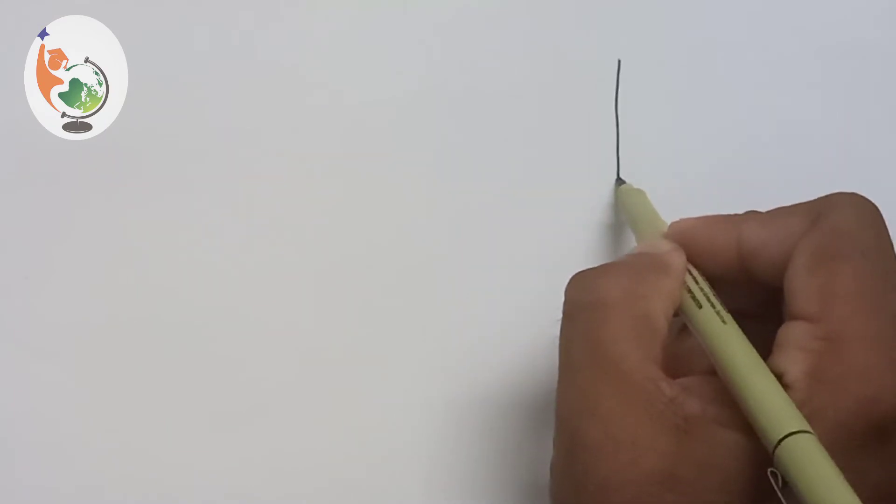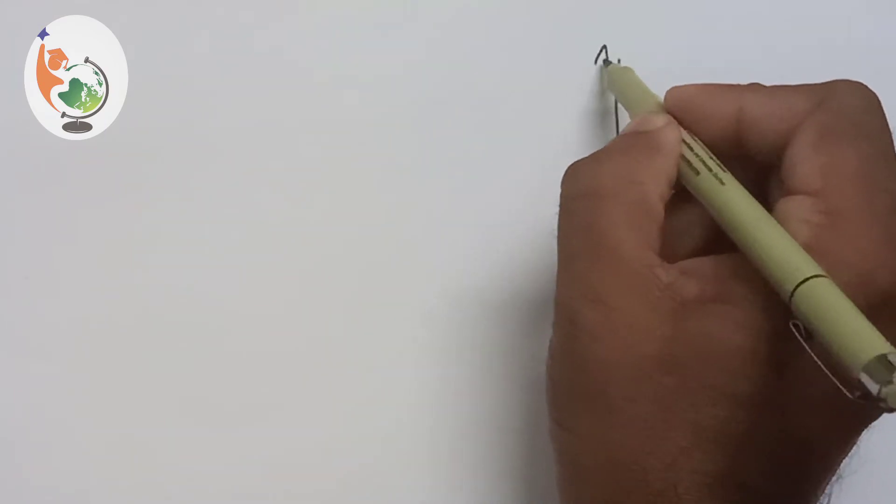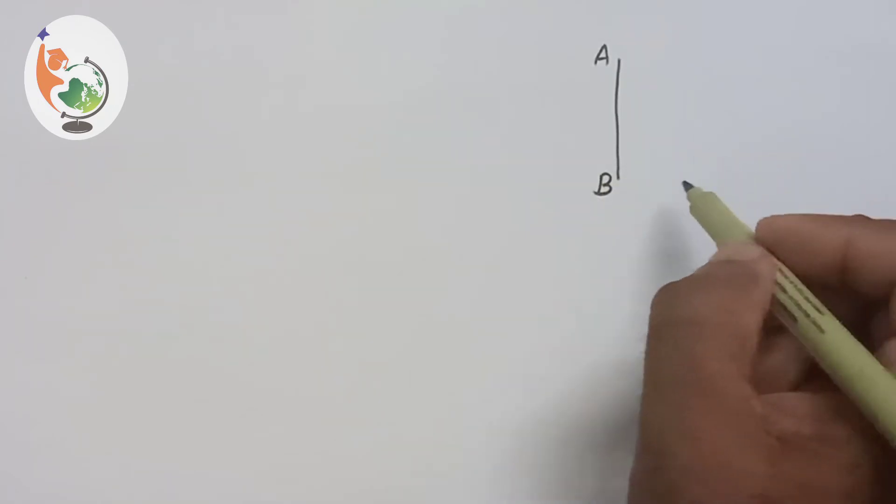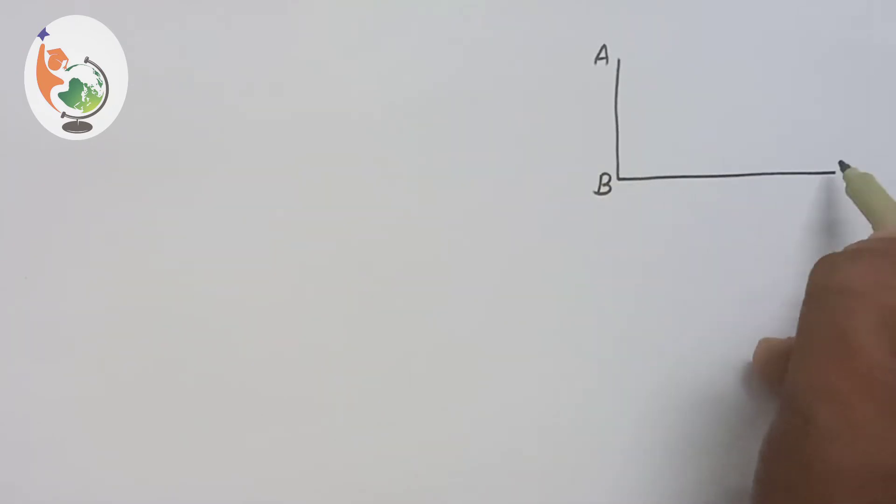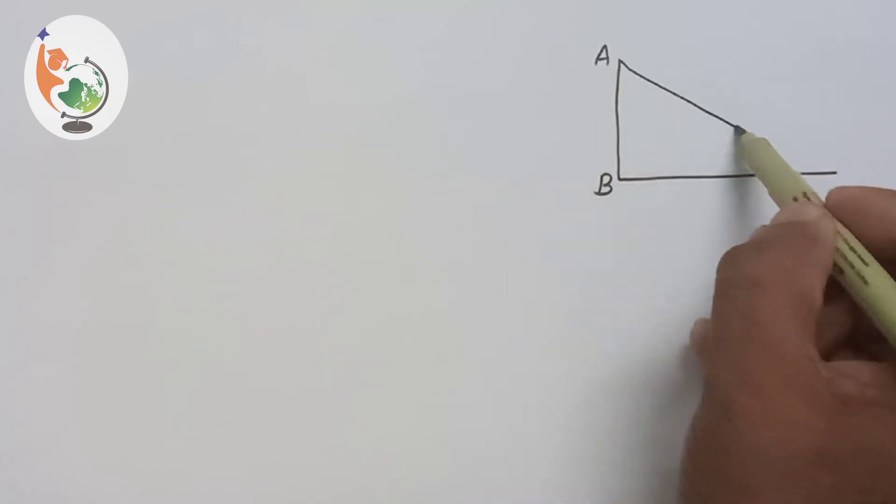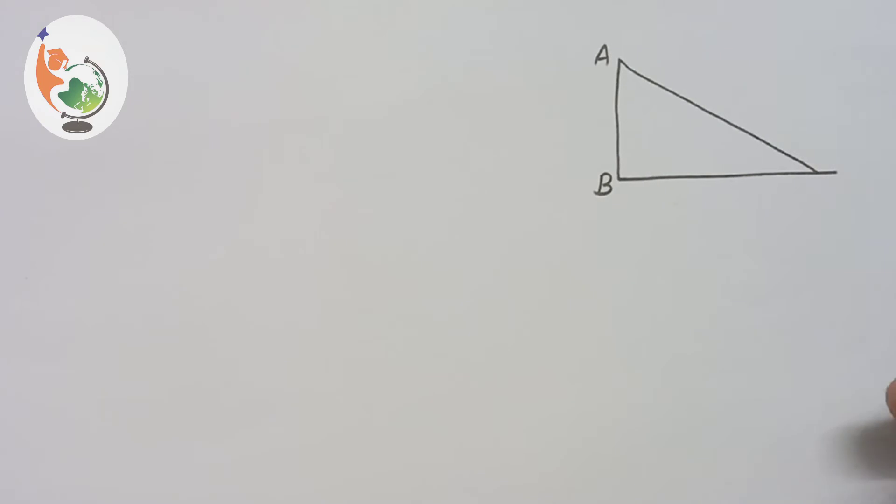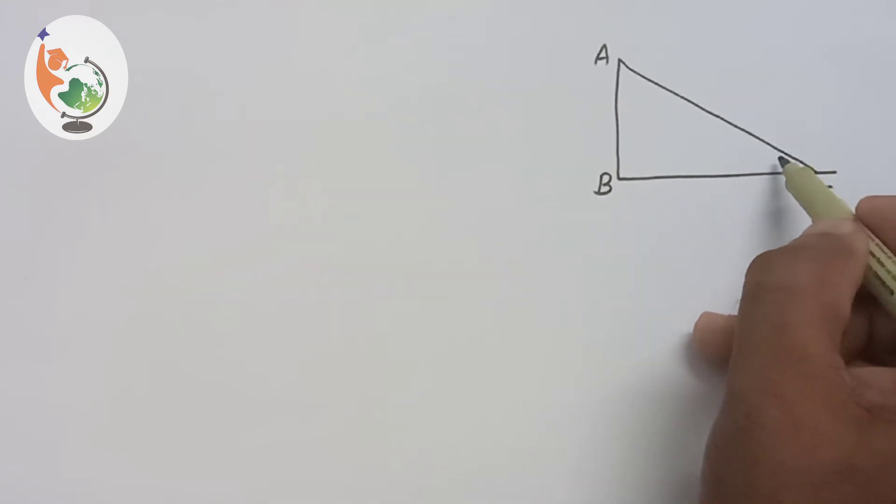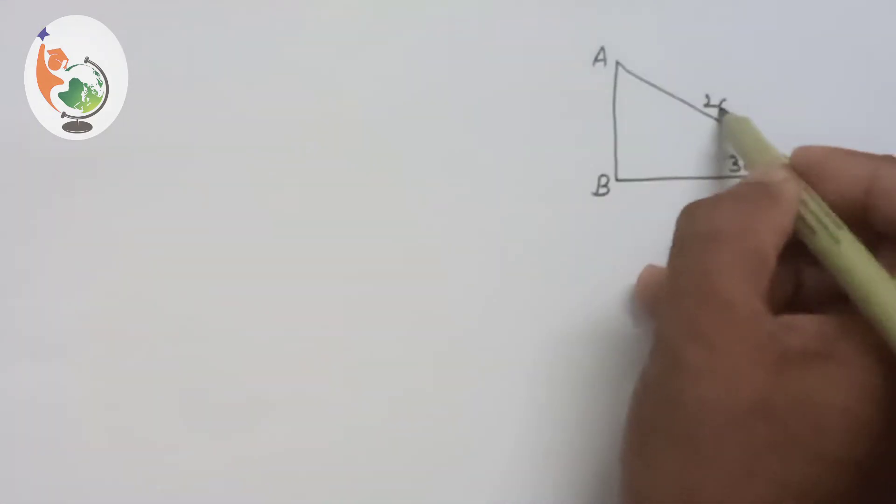Let us draw a rough figure. A vertical pole is there, that is AB is a vertical pole, and a rope is tied from the top of the vertical pole to the ground. Let us see the point on the ground. The angle between the rope and the ground is 30 degrees and the length of the rope is 20 meters.